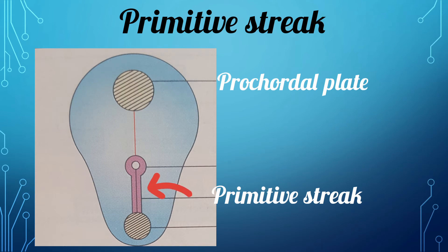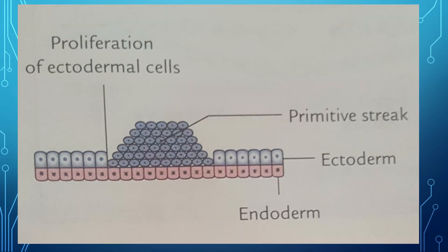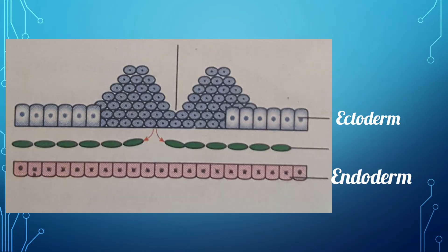From the bottom of this groove, the primitive streak cells spread between the endoderm and ectoderm to form the third germ layer, the mesoderm.